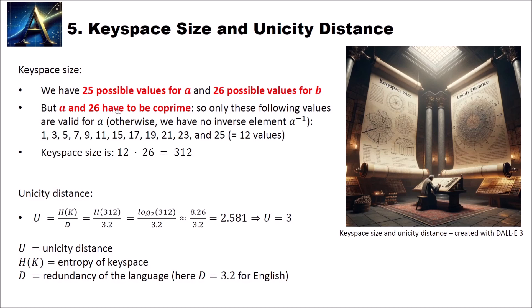But a and 26 have to be co-prime, remember? Otherwise, we won't have an inverse number for a. So only these following values are valid for a: 1, 3, 5, 7, 9, 11, 15, 17, 19, 21, 23, and 25. All these numbers are co-prime with 26. And these are 12 values. So our key space size is 12 multiplied by 26, which is 312.